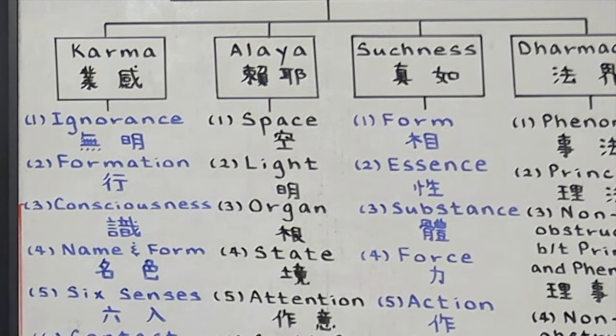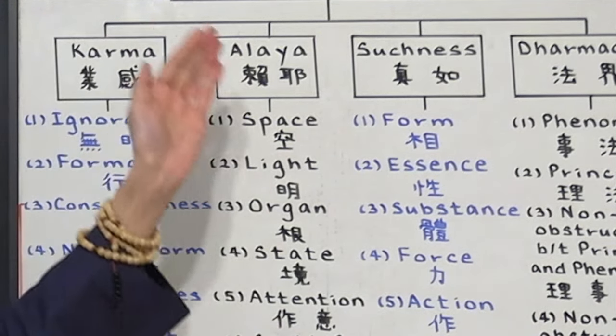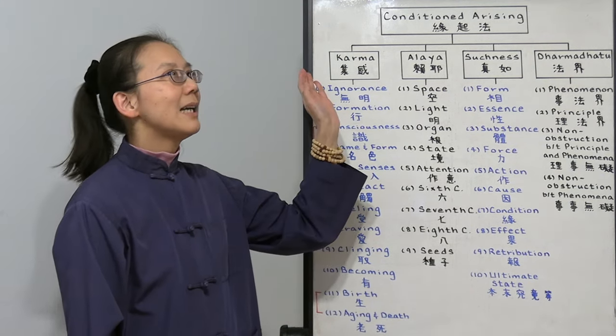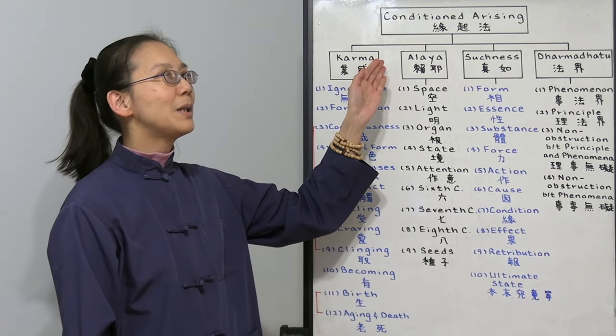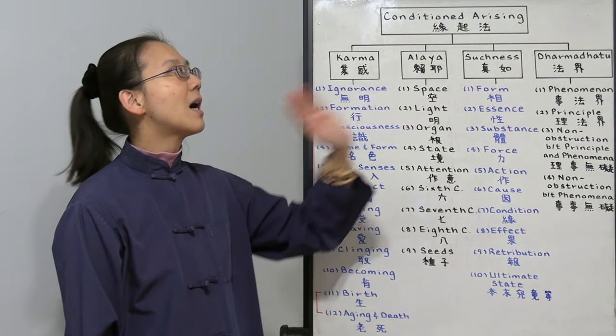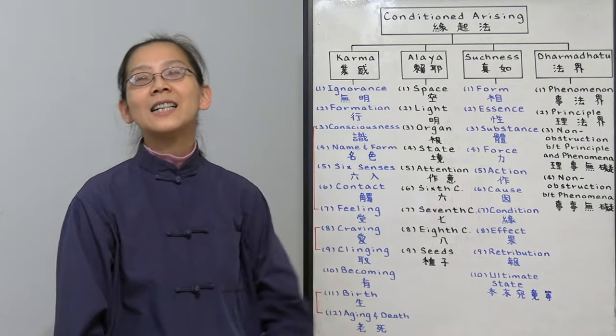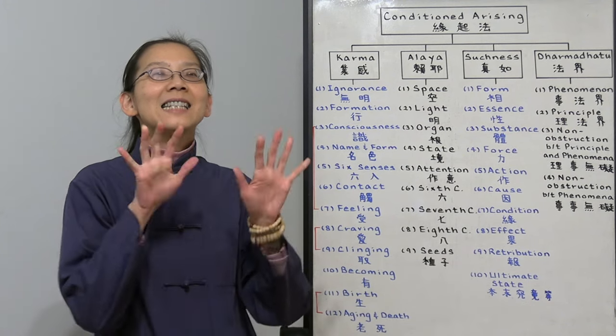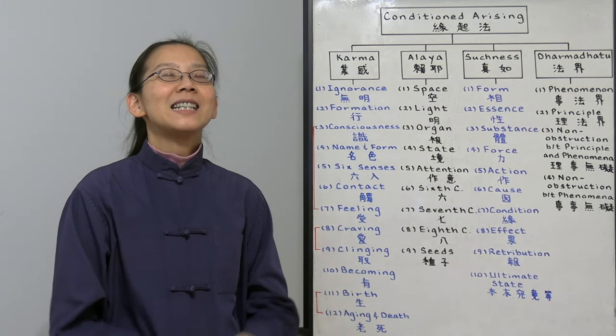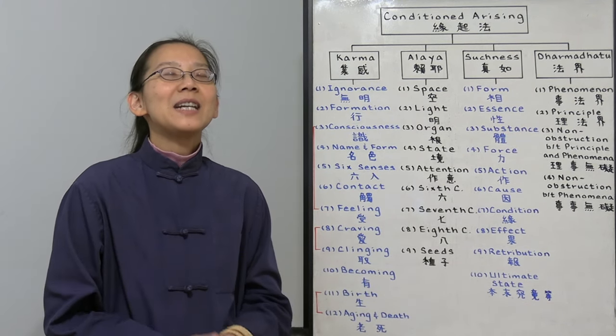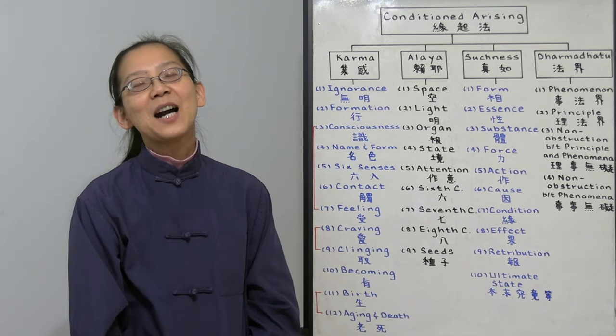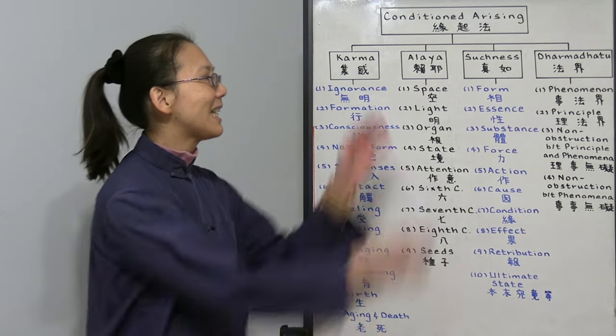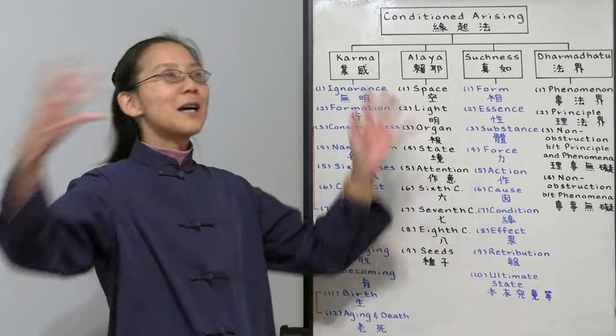Number three is the condition arising based on our true suchness. Maybe life is not about karma. It's not about the deluded mind. It's about our true nature. We call it the suchness. Tentai Buddhism tells us that there are actually ten features of the ten dharma realms that's already innate in us, in our Buddha nature. The mind is already the Buddha.